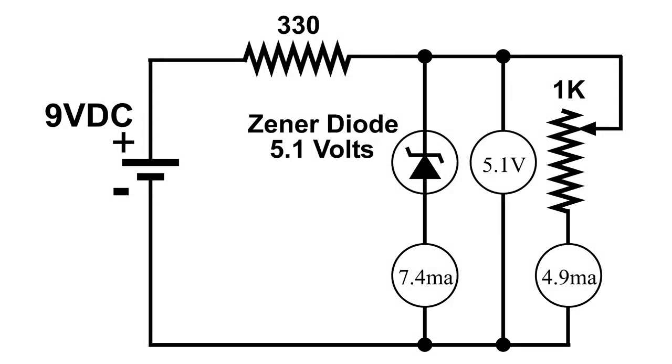In my first Zener diode video, we took a look at a simple circuit using a 5 volt Zener diode to see how it acted in that circuit. And what we found out was that when the load changed, the Zener diode changed its internal resistance to keep the output value at 5 volts.